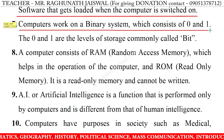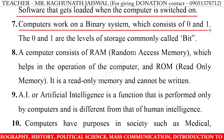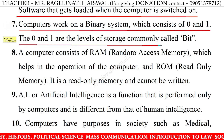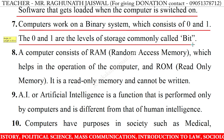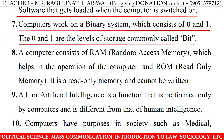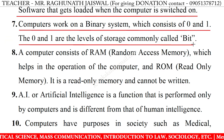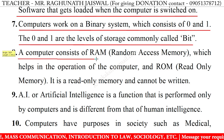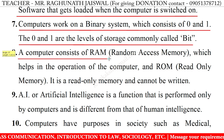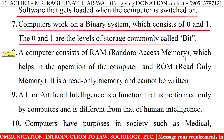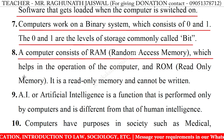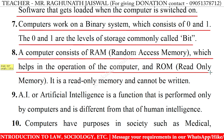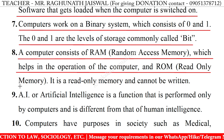6. On the other hand, operating software is essential and gets loaded when the computer is switched on. 7. Computers work on a binary system which consists of zero and one — the zero and one are the levels of storage, commonly called bits. 8. A computer consists of RAM (Random Access Memory), which helps in the operation of the computer, and ROM (Read-Only Memory), which cannot be written to.